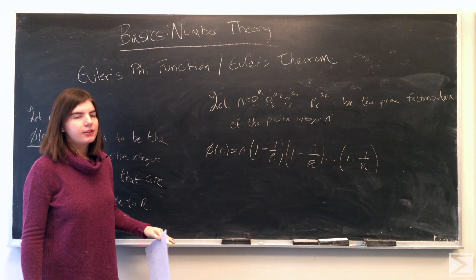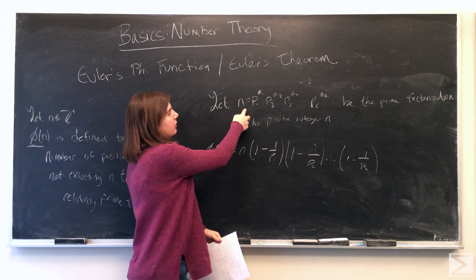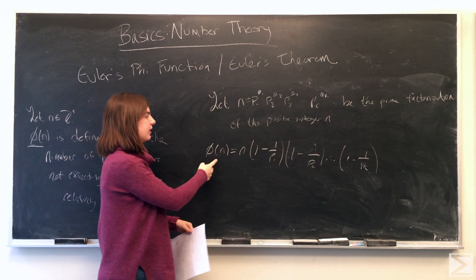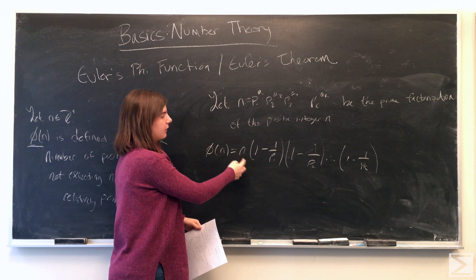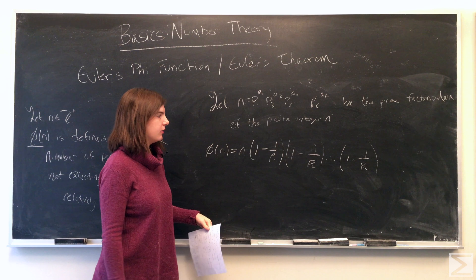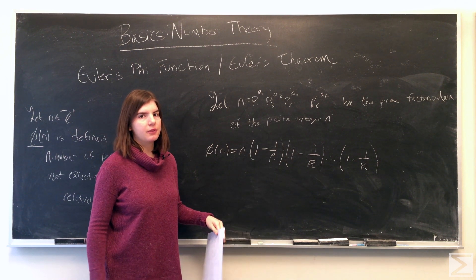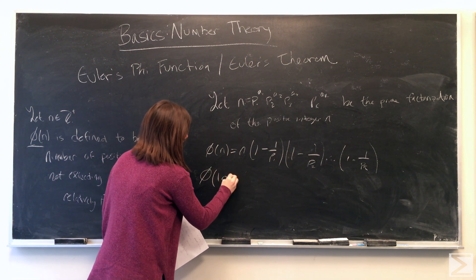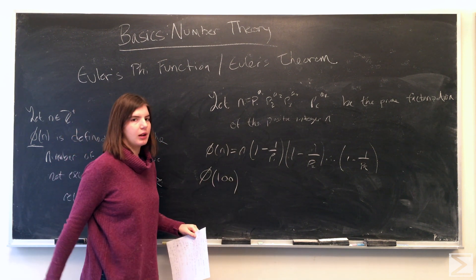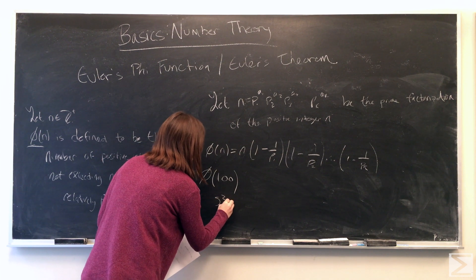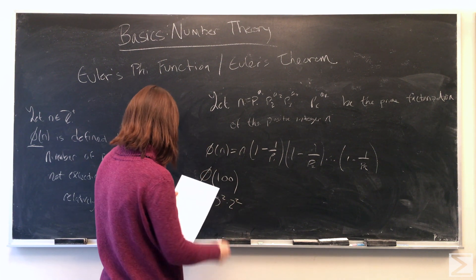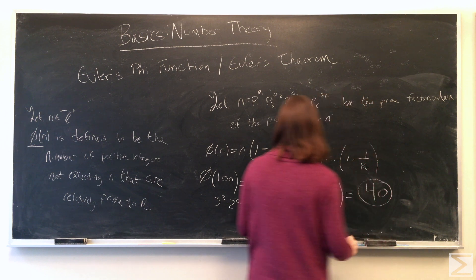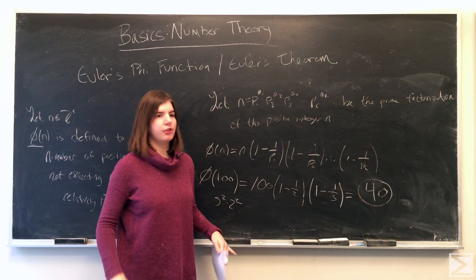And another method to calculate the phi of a large number is if you let n equal p1 to the a1, this is all the prime factorization of the positive integer n, then you can calculate the phi of n by multiplying n times 1 minus 1 over p1 times 1 minus 1 over p2, all the way through all its prime factors. We'll do an example. If you want to calculate the phi of 100, we'll break 100 up into its prime factorization, which is 5 squared times 2 squared. That's 100 times 1 minus 1 half times 1 minus 1 fifth, which is 40.